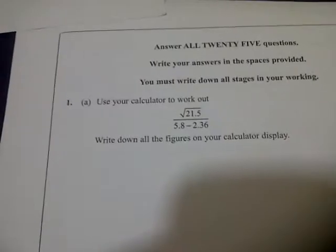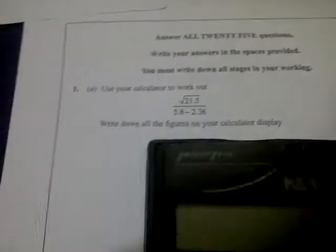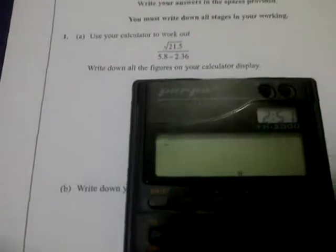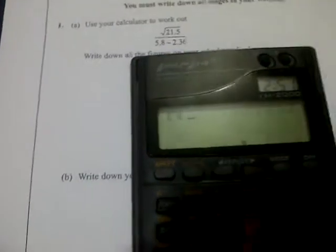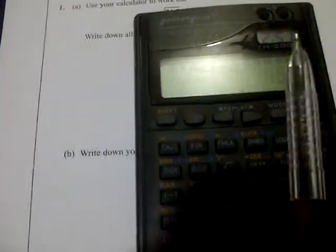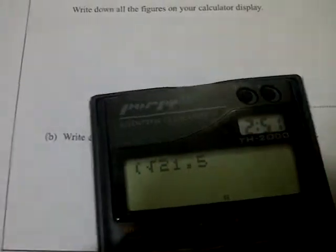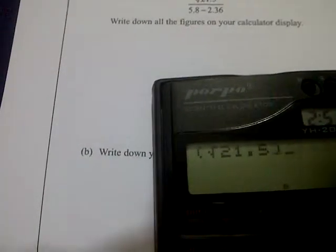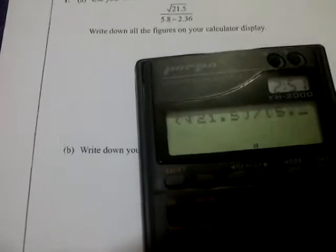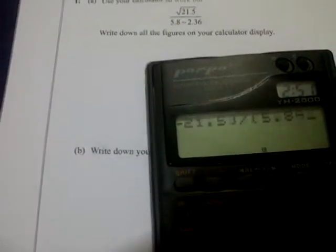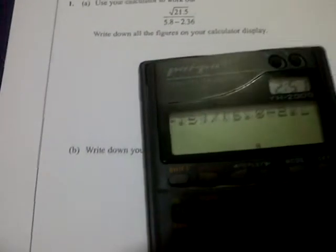Write down all the figures on your calculator display. Now let's do it: root of 21.5 divided by 5.8 minus 2.36.